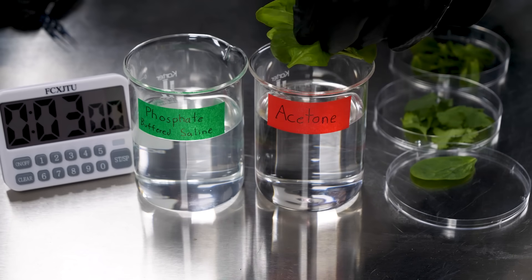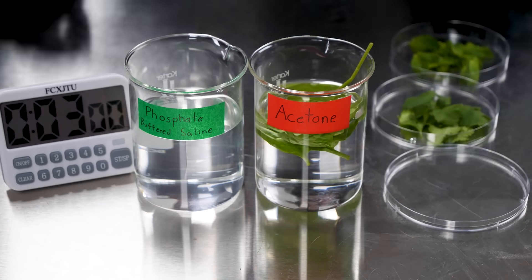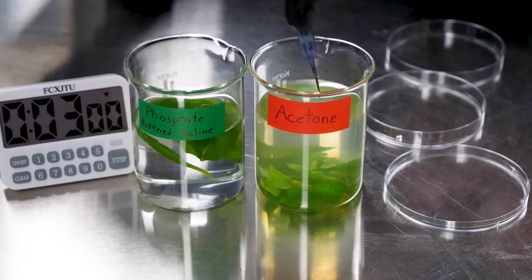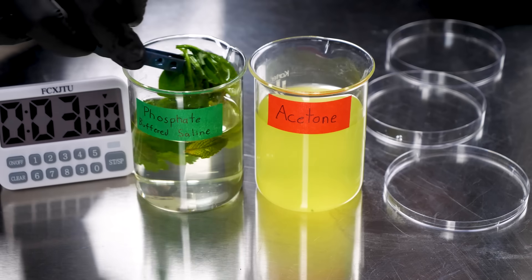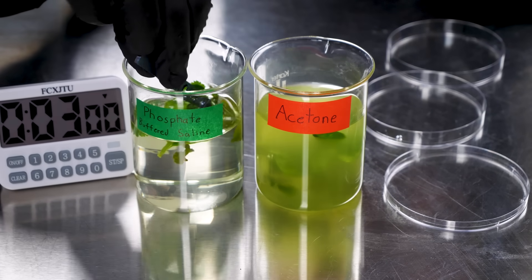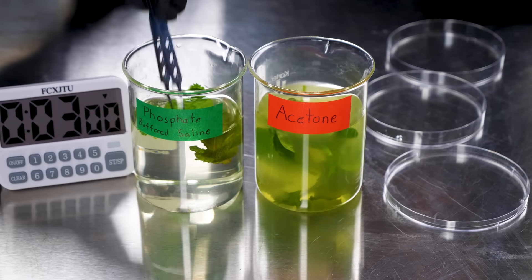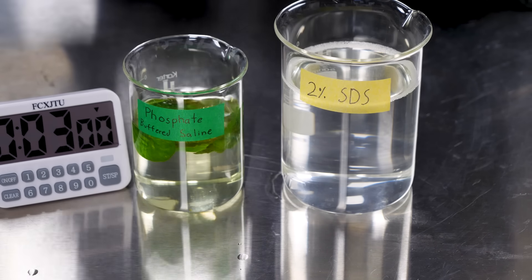Now we need to remove the waxy cuticle that coats the outside of the leaf. To do that, the paper we're following suggested dunking the leaves alternately back and forth between a non-polar solvent, here we chose acetone, and a solution of phosphate buffered saline. Honestly, I think this probably caused more damage than just letting the leaves soak in the solvent longer, but we did three cycles of carefully fishing out the delicate leaves and transferring them back and forth between the beakers, letting them sit for a minute between cycles. After that, we're onto our first soap washing.